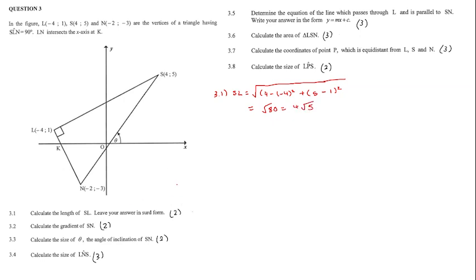Question 3.2. Calculate the gradient of SN. To calculate the gradient, we use the gradient formula. We can say the y-value of s minus the y-value of N, over the x-value of s minus the x-value of N. And we then get our gradient to be 4 over 3.